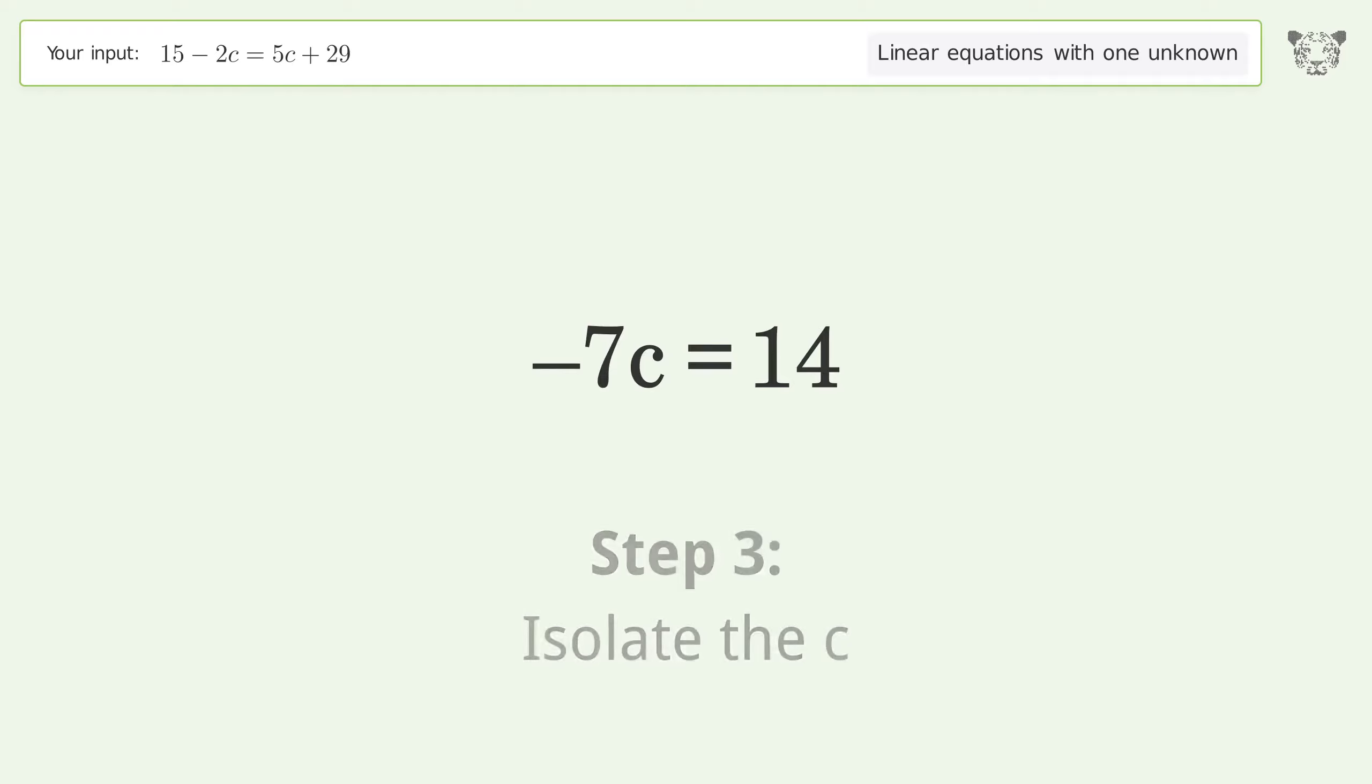Isolate the c. Divide both sides by negative 7. Cancel out the negatives. Simplify the fraction.